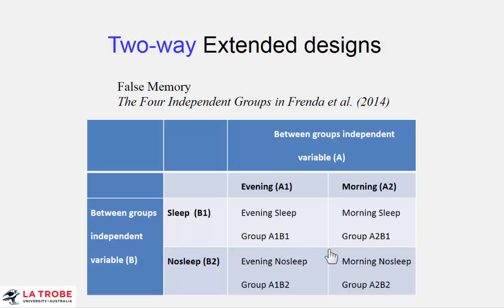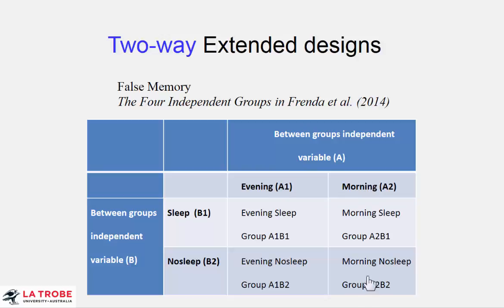In advance of seeing the data, we need to specify what our questions are. For two-way experiments, our general strategy is to specify in advance some comparisons or contrasts that best match our research questions. A very typical choice is to nominate the two main effects and the interaction. A main effect is the overall effect of one independent variable — the overall effect of evening or morning averaged over all other conditions. So A1B1 averaged together with A1B2 gives the A1 level, which is evening.